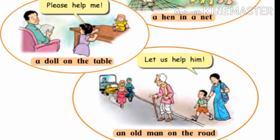In the third picture: let us help him — an old man on the road. You can see in the picture, so many vehicles are traveling on the road. An old man is trying to cross the road, and one small boy and his mother are helping that old man. This mother and that small boy are saying let us help him. In this way, we learn how to help a needy person in different situations.